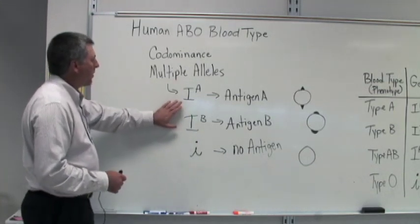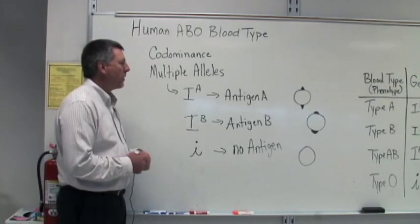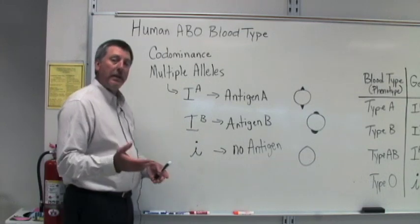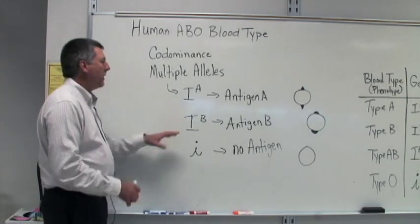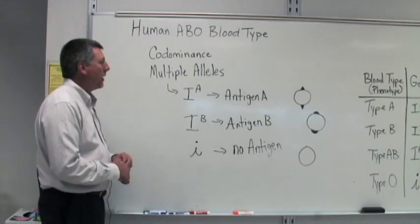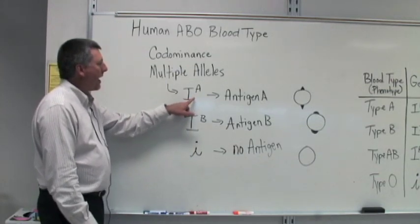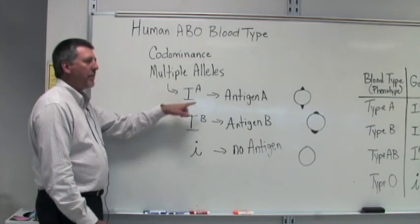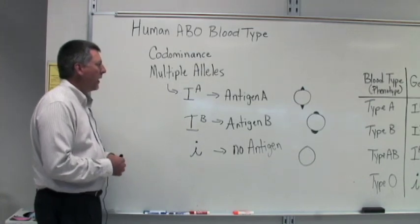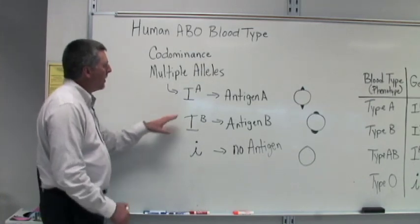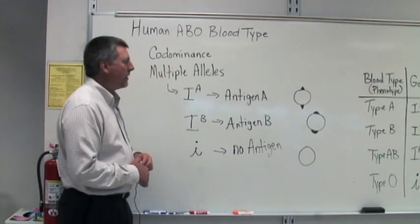In the human ABO group, there are three alleles that may be involved with determining one's blood type. Of course, any individual only has two of each allele, but there are three in the population. One of these we refer to as the IA allele — capital I, capital A is just a standard convention, but you could use a different system if you wanted to. The IA allele codes for antigen A.